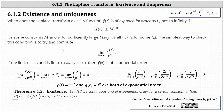The simplest way to check this condition is to try and compute the limit as t approaches infinity of f of t divided by e to the power of ct, where c is some constant. If the limit exists and is finite — usually zero — then f of t is of exponential order.